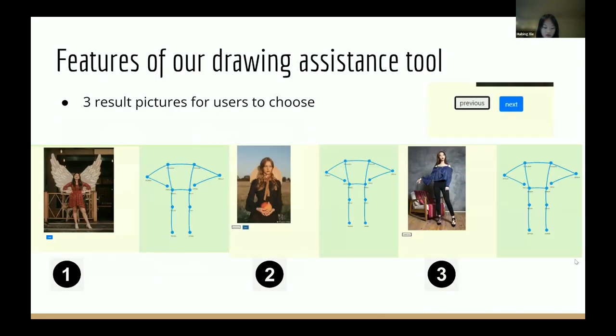We provide three result pictures for users to choose. The server analyzes the stick figure pose by calculating the angles of different parts of the body and compares the angle with the existing images in the database and returns the three most similar images to the user.